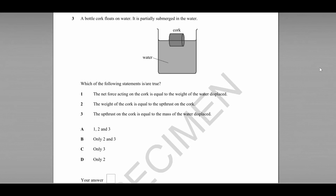Question number three gives us a bottle cork floating in water. You can see from the diagram it is partially submerged in the water, part of it is below the water, part of it is above.